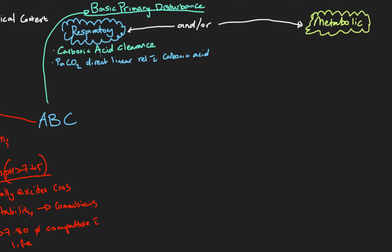By measuring the PaCO2 we can get an indication of how well the lungs are clearing acid from the body. Once blood passes through the pulmonary vasculature at the alveolar-capillary membrane and is pumped out from the left heart as arterial blood, it should be in homeostasis — clearing the same amount of acid we produce. Arterial blood is very homogeneous throughout the body, so the PaCO2 is a very good measure of our acid-clearing process.